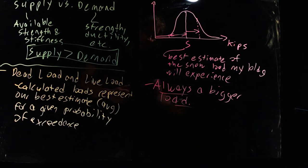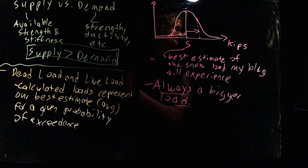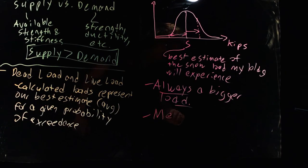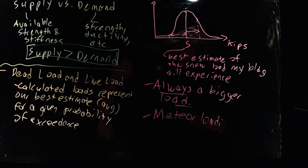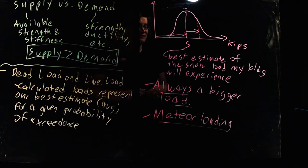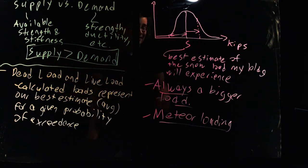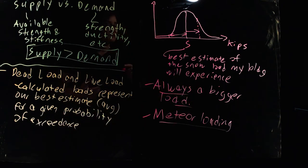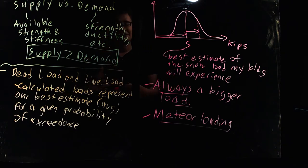There is always a bigger load. My favorite case is meteor loading. Meteor loading is not something you find in design codes — we don't typically design for it — but there is something like two million tons of various space debris landing on the planet every year. If you wait long enough on a long enough timescale, eventually a giant meteor is going to fall and crush any building on the surface of the earth. The real point is that we can never eliminate risk entirely — we can only manage it.